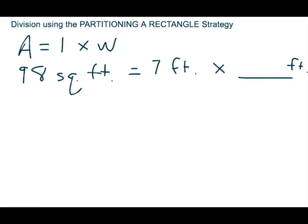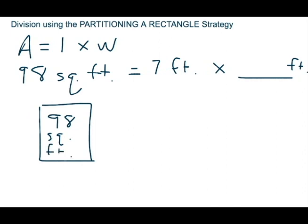I'm going to draw my rectangle. Inside the rectangle, I'm going to draw the total square feet. We already know that, and that's 98 square feet. We also know that the length is seven feet, so I'm going to write that up at the top. For this problem, we are trying to solve for the width, and that is the unknown.